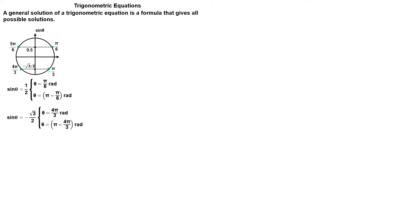So if you want to solve the equation sine of theta equals sine of beta, we know that theta is equal to beta or theta is equal to pi minus beta. However, the sine function has a period of 2 pi radians, or 360 degrees — that is, it repeats every 2 pi radians. Thus, there are many other possible solutions. We get all solutions by adding integer multiples of 2 pi radians: the solutions can be written as beta plus 2 pi times k, or pi minus beta plus 2 pi times k, where k is an integer.